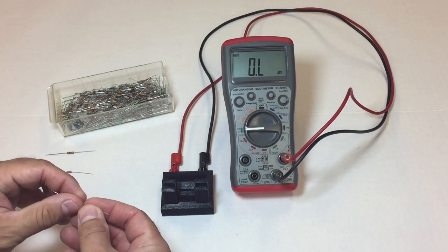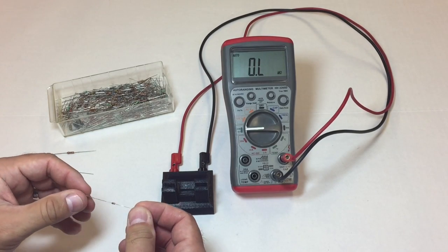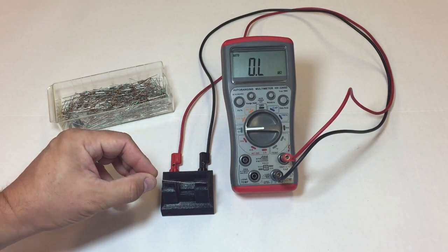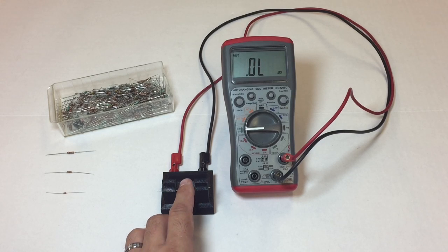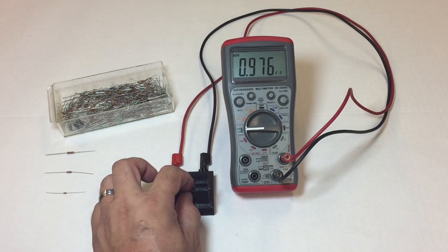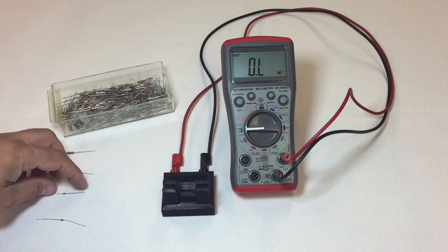So this first one is a little 1/8 watt resistor and I know it's 1k. So let's just test it and see what it says. Now it's jumping around and it's because it needs a little bit of pressure on it. And there's the reading. 0.975k. So that means it's a 1k. So that's right.